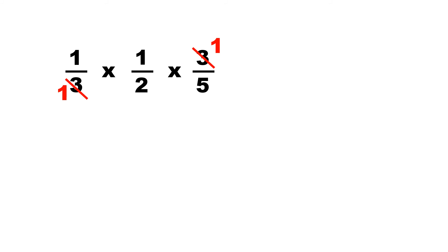And now, we multiply across. 1 times 1 times 1 equals 1. The bottom numbers, 1 times 2 will be 2, times 5 will be 10. 1/10 is the answer.